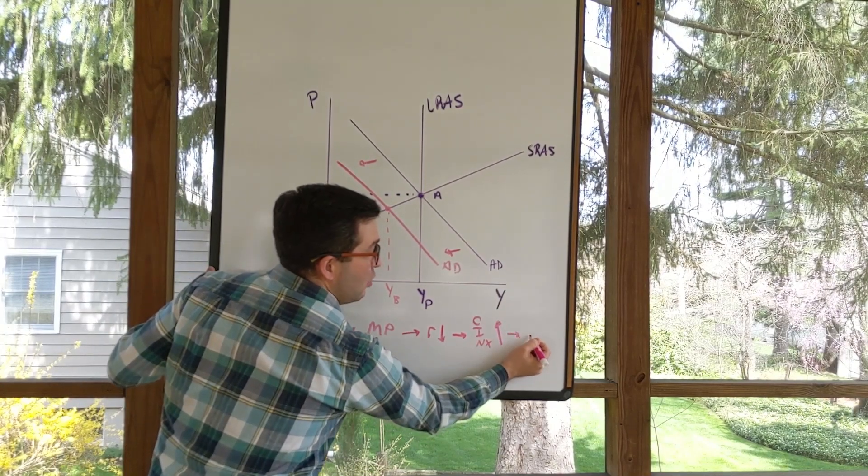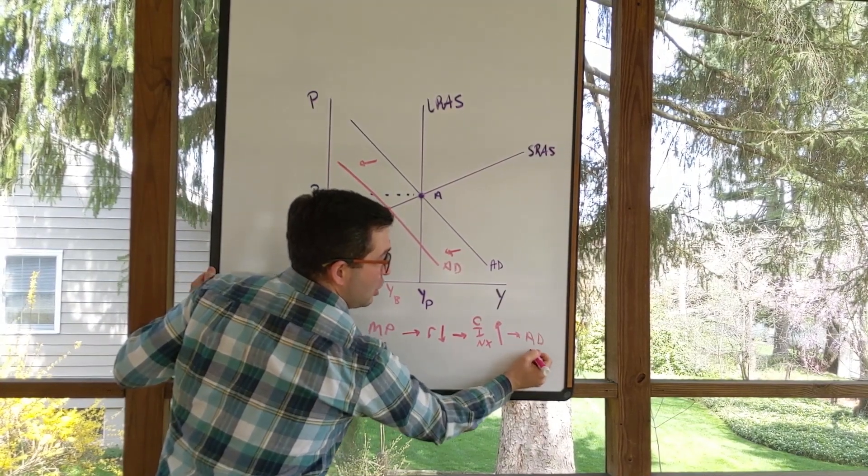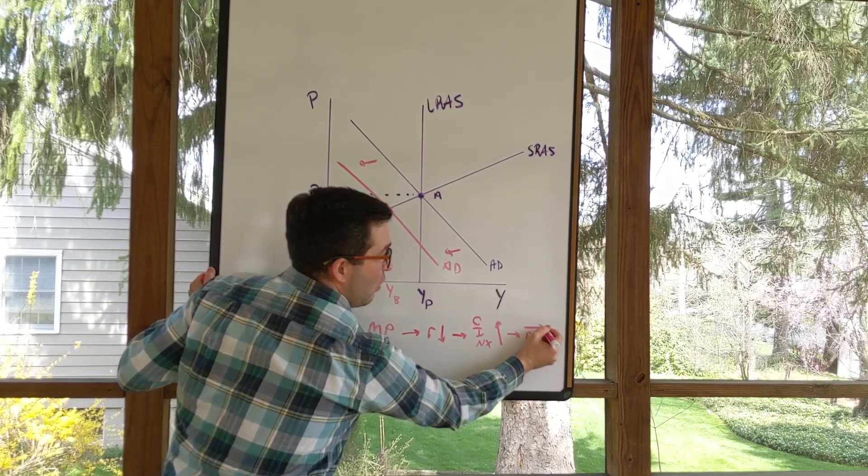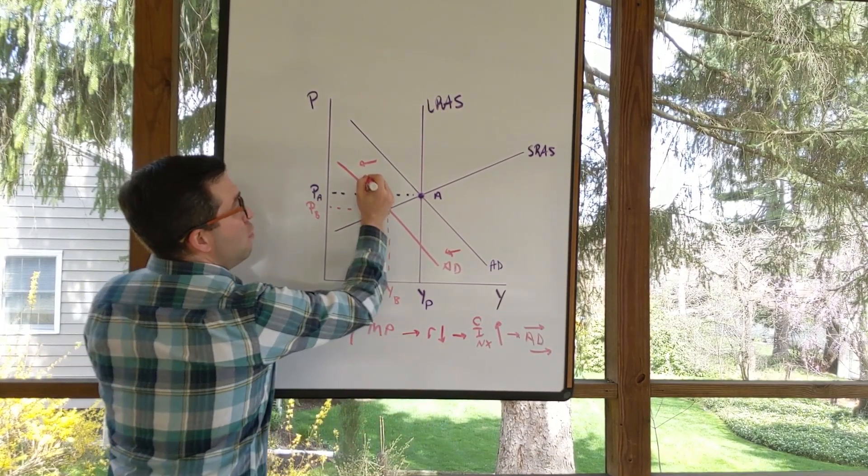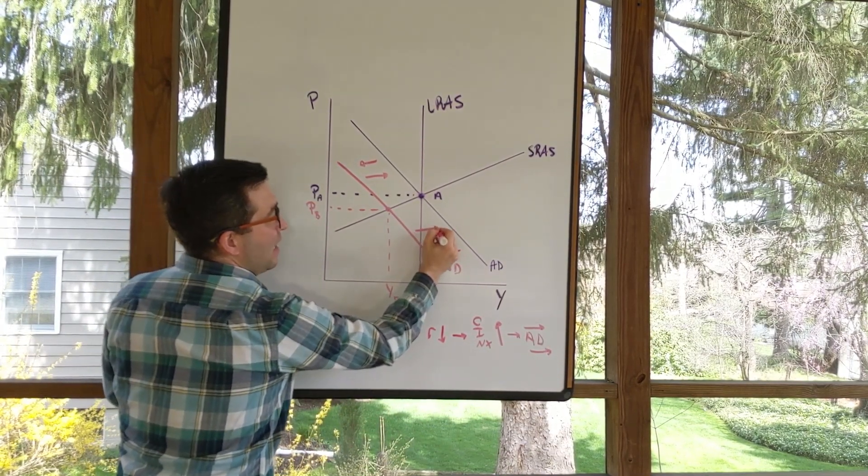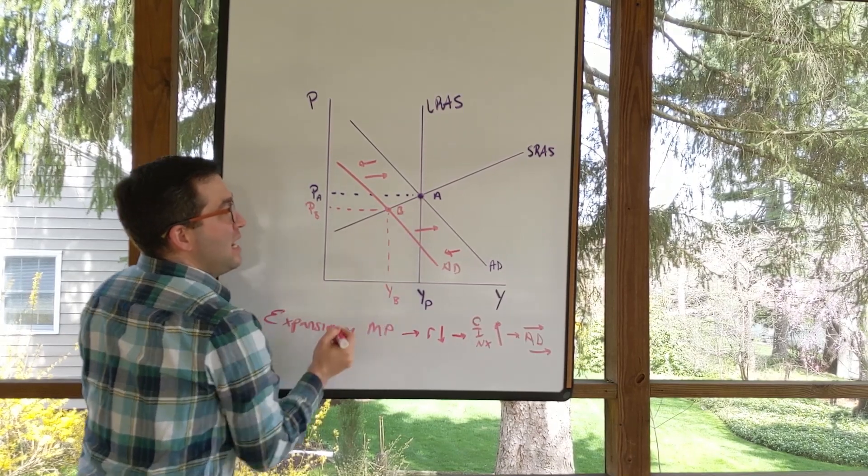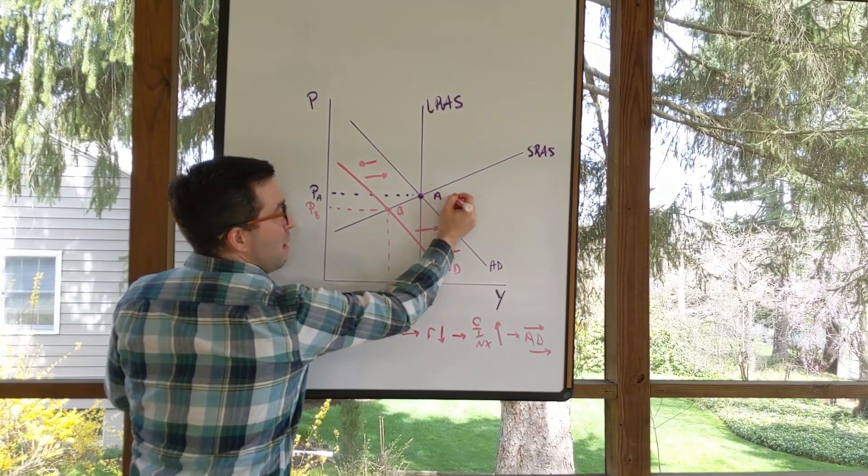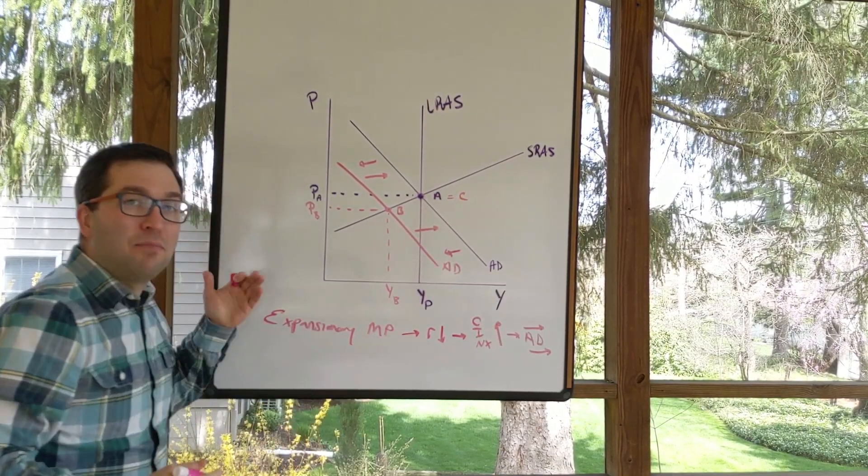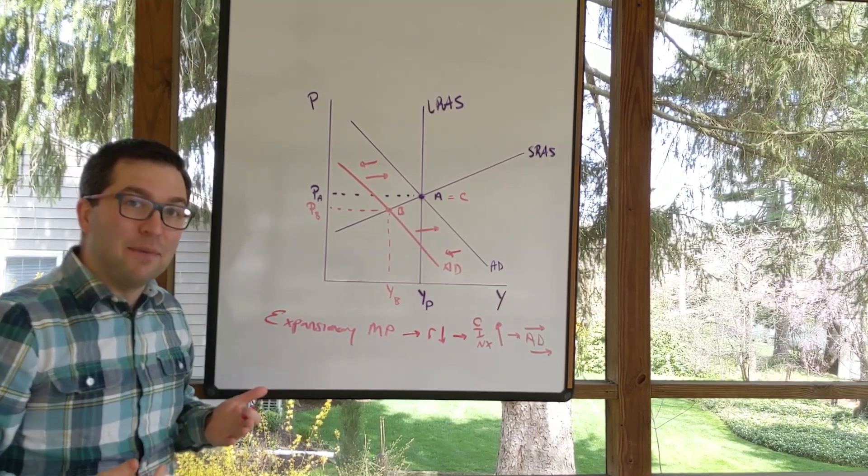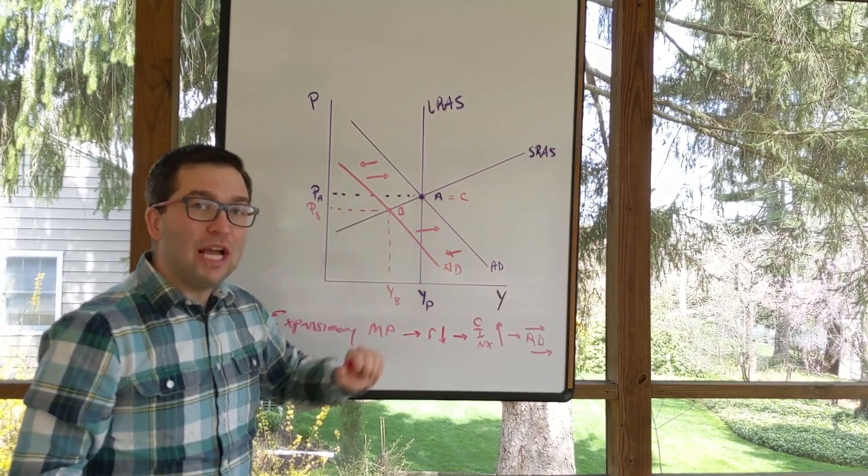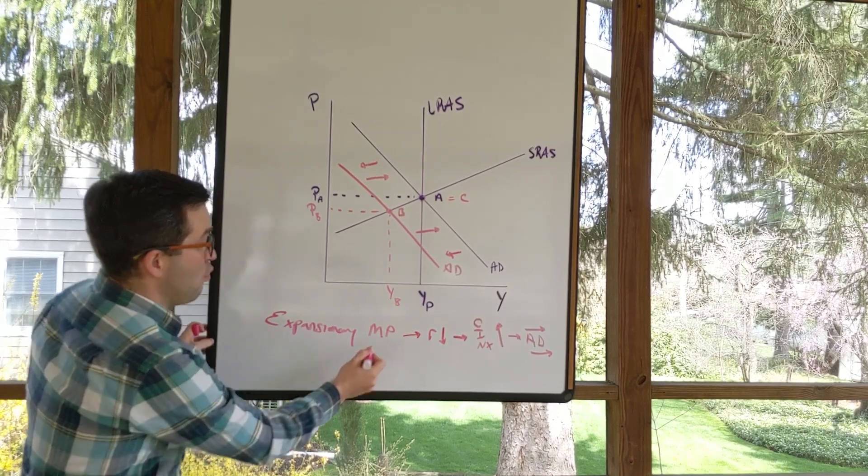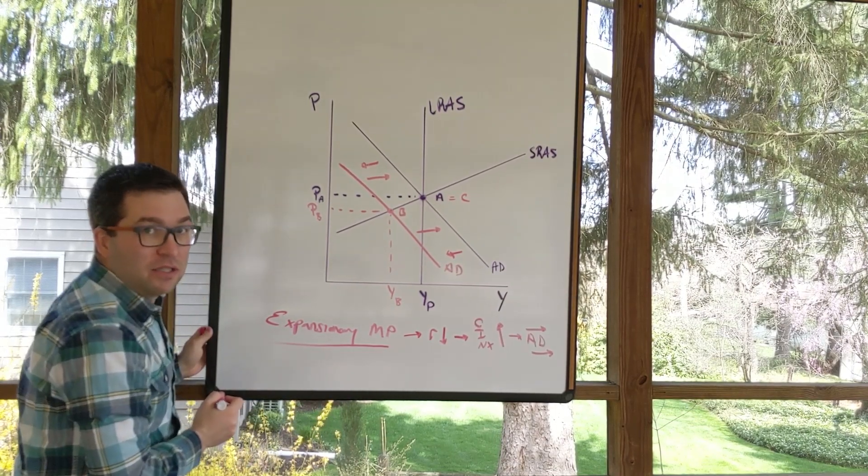So we're just going to move this aggregate demand curve back. We were at point B here and it just moves back and makes point A and C the exact same thing. So we are pushing aggregate demand back to the right through expansionary monetary policy.